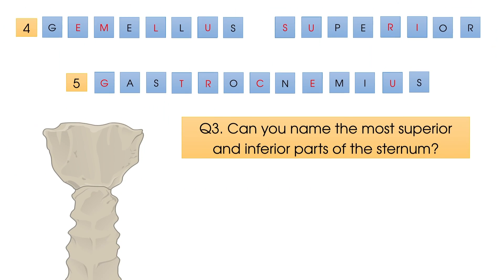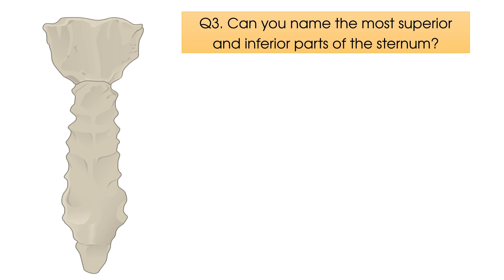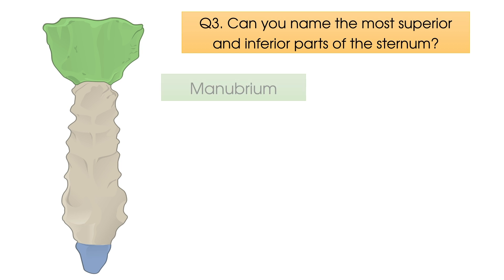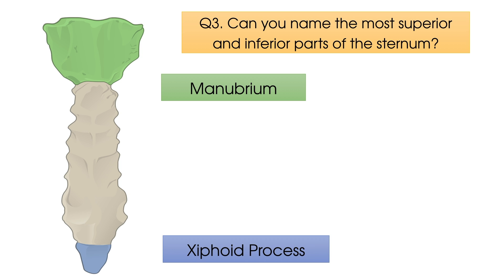Question number three: can you name the most superior and inferior parts of the sternum? At the top of the sternum we have the manubrium, and at the bottom of the sternum we have the xiphoid process.